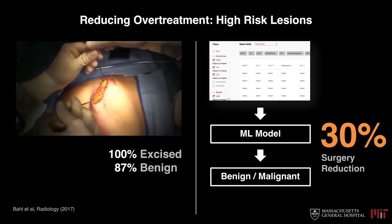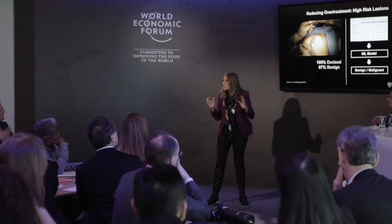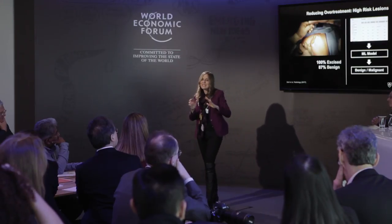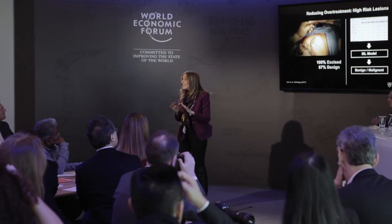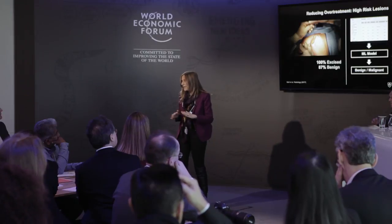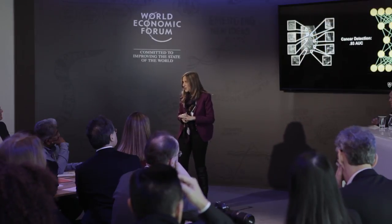Another important case where this structured approach can help us is to prevent overtreatment. For instance, if a woman today is diagnosed with a high-risk breast lesion, it will be excised. Only 13 percent of them are actually cancer, which means the rest underwent surgery for nothing — disfiguring surgery. With machine learning, we can predict 30 percent of patients that are actually benign and spare them from surgery.